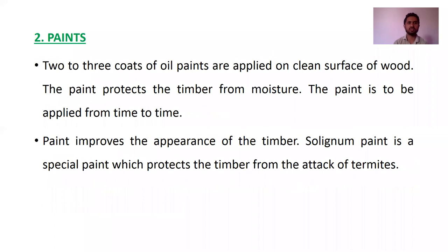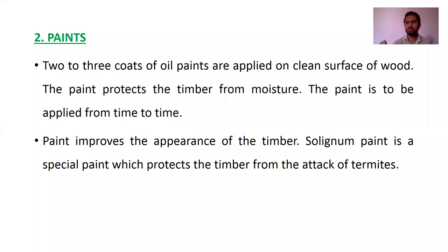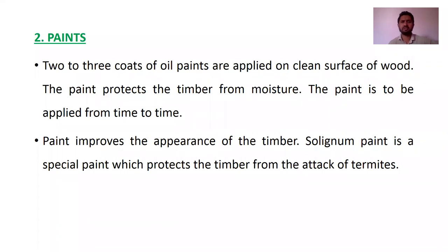Next, we have paints. Two to three coats of oil paint are applied on the clean surface of wood. The paint protects the timber from moisture and is to be applied from time to time. Paint also improves the appearance of the timber. Solignum paint is a special paint which protects the timber from the attack of termites. Compared to tar, paint is a better way — it will look good, and whichever color you use, it will give an aesthetic view.